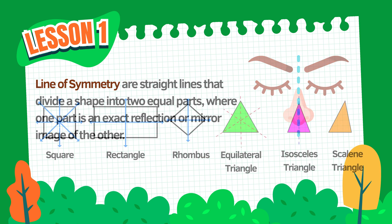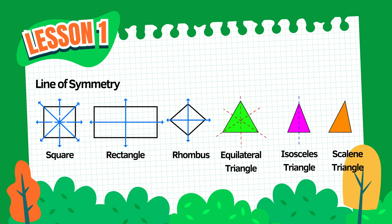Let's look at some examples. This is a square. A square has four lines of symmetry: two across the middle and two diagonally. No matter which line you choose, the parts on each side will match exactly. This is a rectangle. It has two lines of symmetry: one vertical and one horizontal.